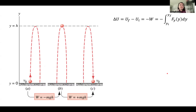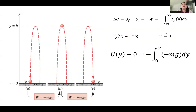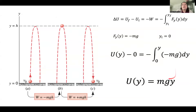We can do the same for gravitational potential energy, but in the y direction. The force due to gravity is negative mg. Taking the integral from zero to y — since there is no y in the integrand, it integrates simply — and we get gravitational potential energy equals mgy. You might also see this written as mgh, where h is the height.